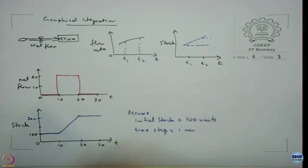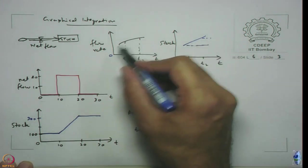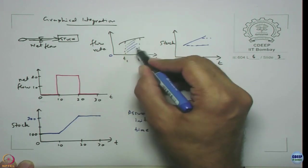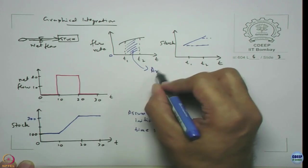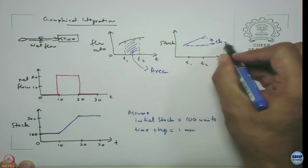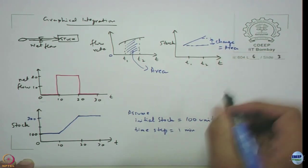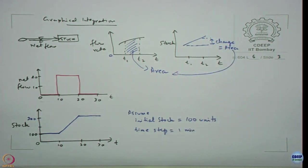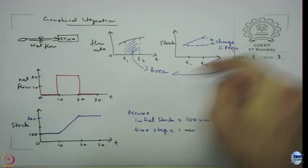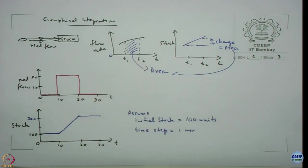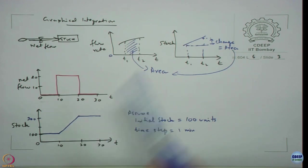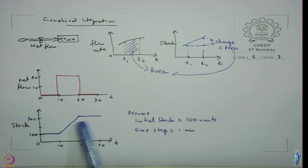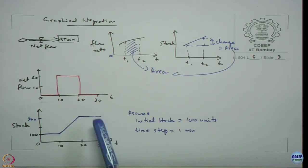Coming back to the figure: as the flow changes over time from say time T1 to T2, the area under the flow curve will equal the change in stock. The change in stock value equals the area under the curve for the flow rates. The change in stock equals the area of the flow rate between the same time interval T1 to T2. This is why the stock has memory — it remains at the value of 300, accumulating all past events.